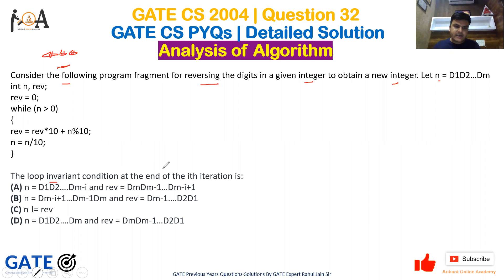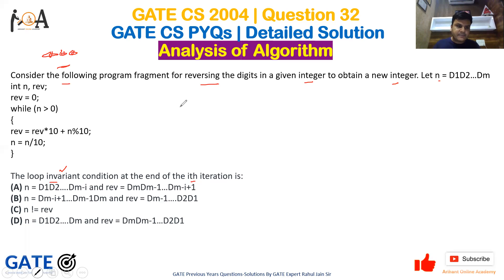The question asks: write the loop invariant condition at the end of the i-th iteration. A loop invariant is a condition that is true after each iteration of the loop. To understand this, let's take a particular value of n — let's say n equals 123.